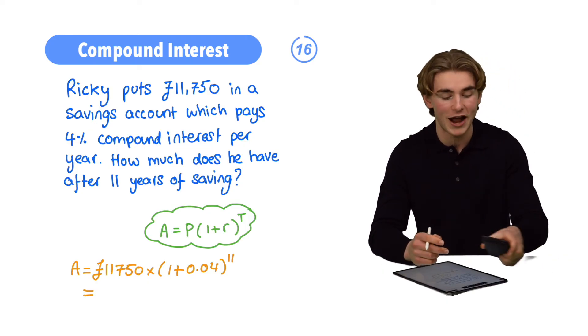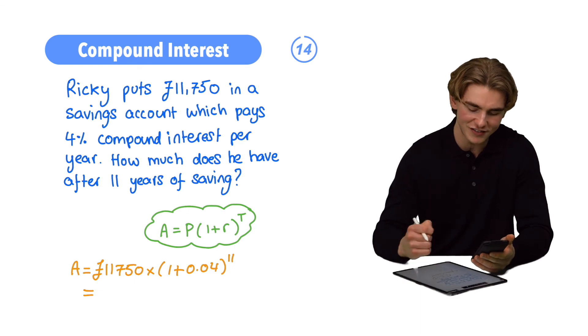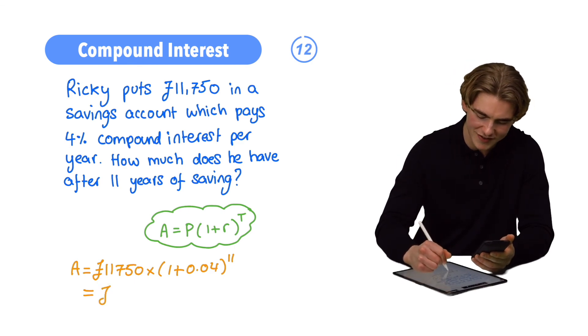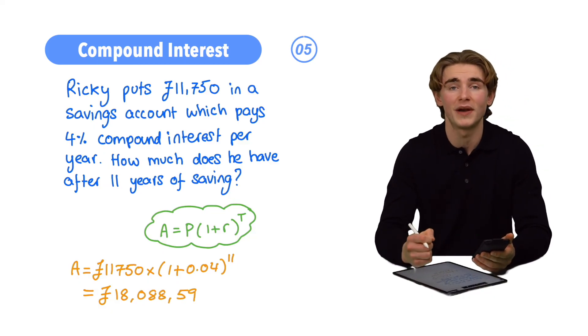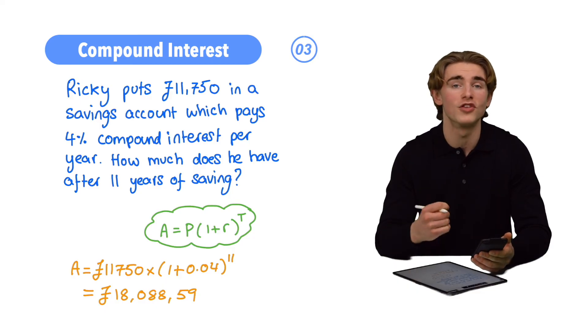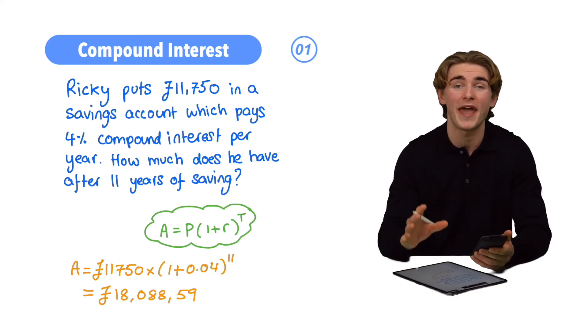Now, we can bring this into our calculator, and luckily, I've already done that. So when we do that, we're going to get £18,088.59 to two decimal places. Check that you can do that with your calculator because this does come up a lot.